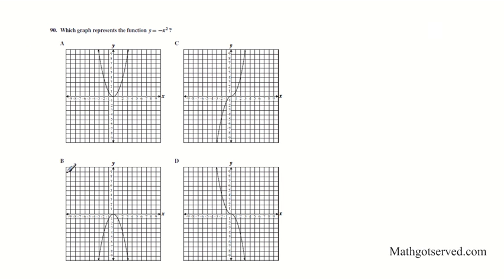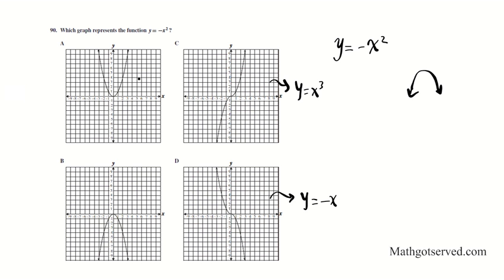Now let's take a look at the last one — question 90 — y equals negative x squared. This is going to be a quadratic, but since it's negative, it's going to be a downward-facing parabola. Looking at the options: two of them are of the nature of y equals x to the third — that cubic curvature — including one descending cubic like y equals negative x to the third. Those are not applicable. We're dealing with the quadratic family. Of the two quadratic candidates, we need the one opening down because A — the leading coefficient — is negative 1. Option B has a negative A, so the answer to question 90 is B.